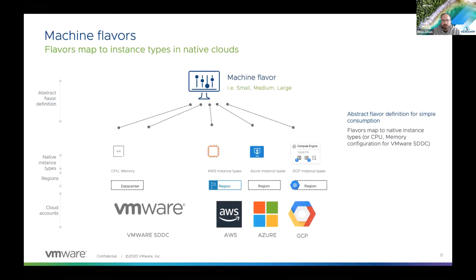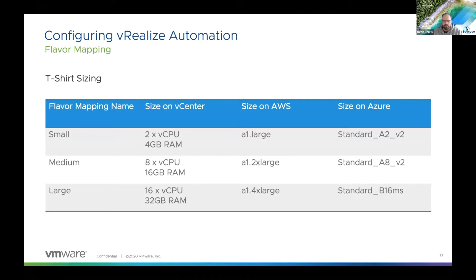We can also do this with machine flavors. Essentially we're creating T-shirt sizes and mapping them back to different cloud instances. We can create flavor names like small, medium, and large — these are vanity names, you can call them whatever you want. You can differentiate them per business unit and set what those sizes look like, whether on-prem, in AWS, Azure, GCP, or whichever cloud you choose. You can create multiple T-shirt sizes for different projects, business units, or needs.